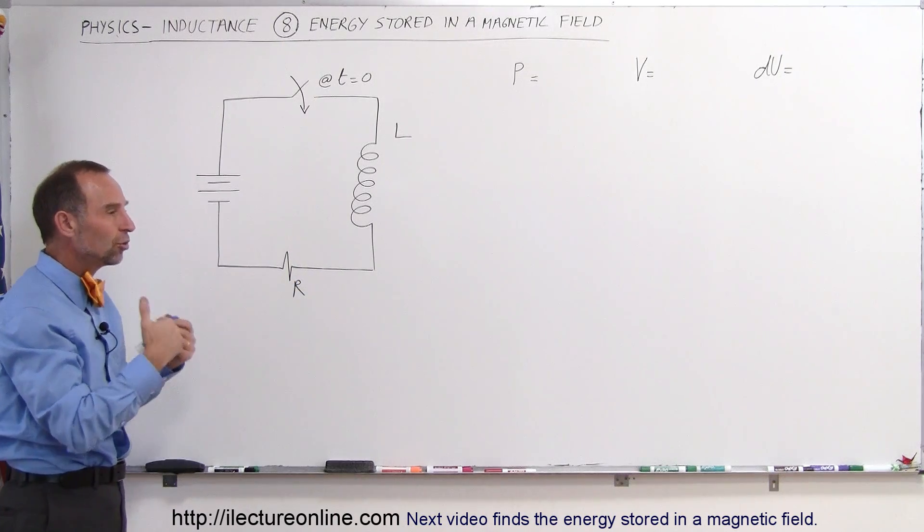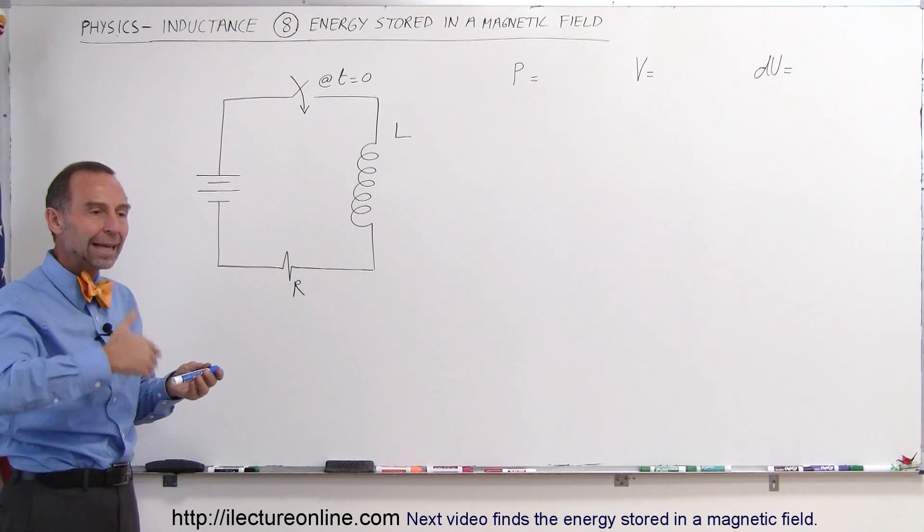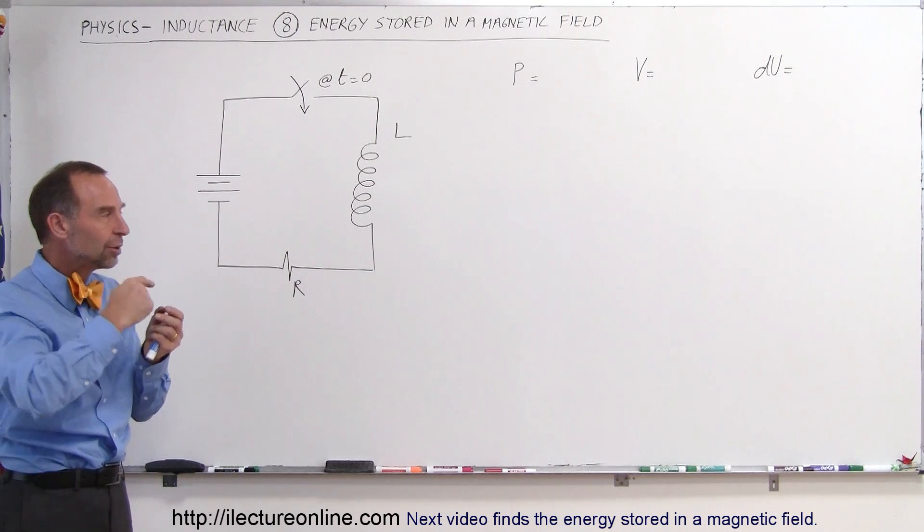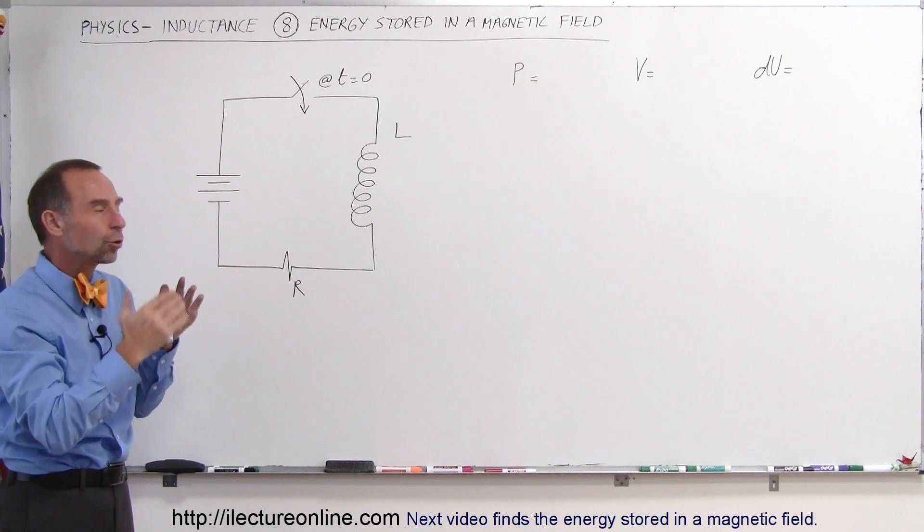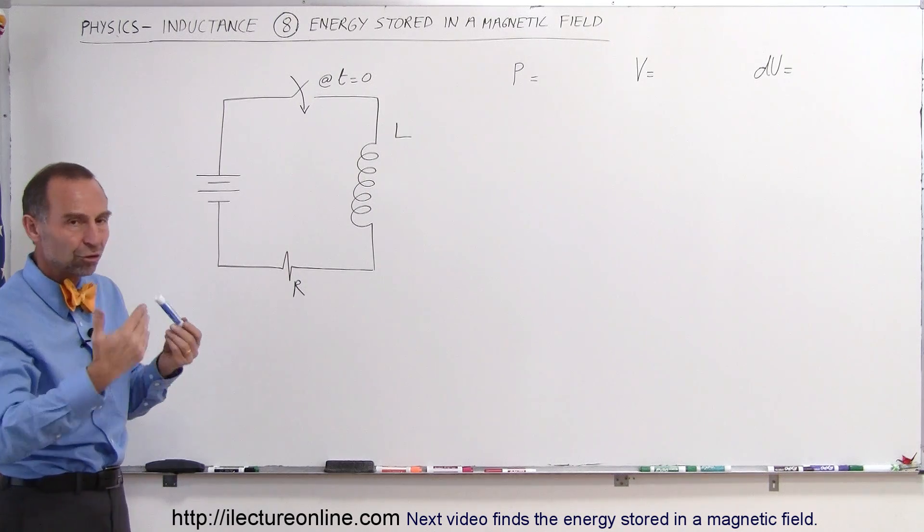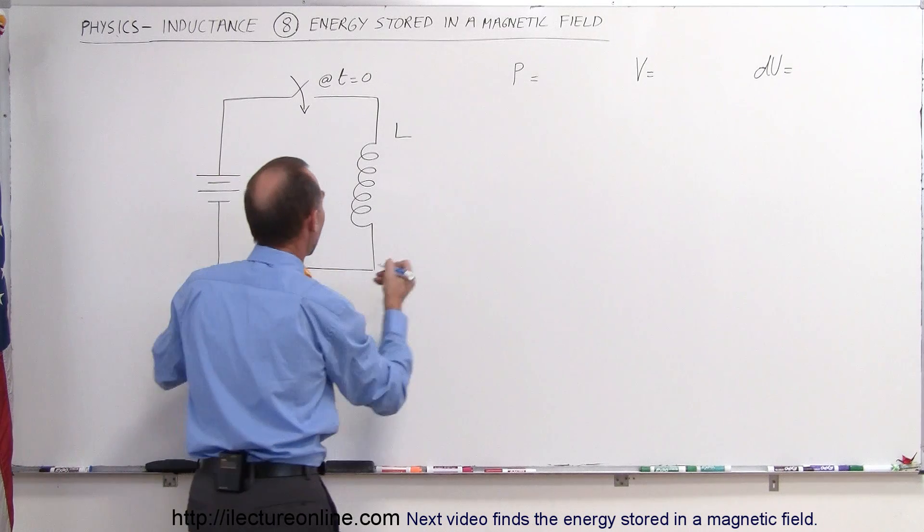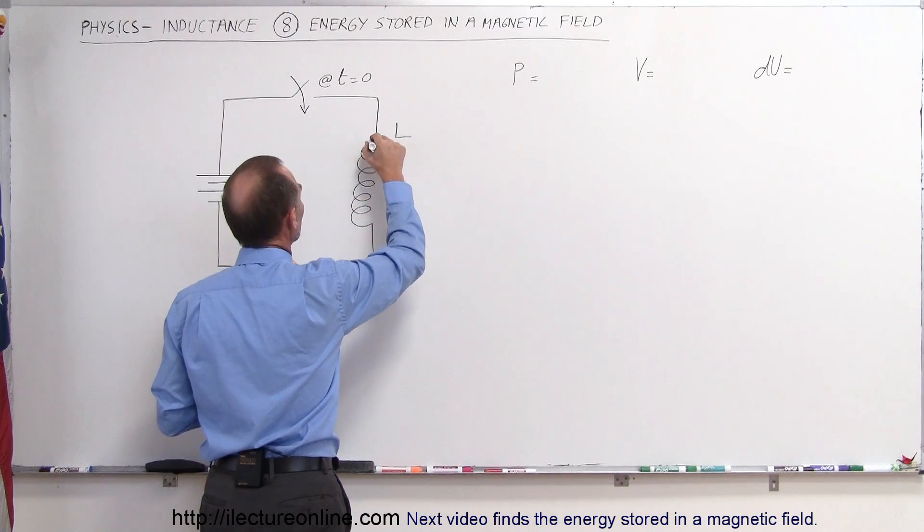And as it's opposing the change, it will start developing a, as the current continues to increase, it will start developing a magnetic field through the coil. So eventually, when we reach steady state after a certain amount of time has gone by, you will have a magnetic field build up through the coil.